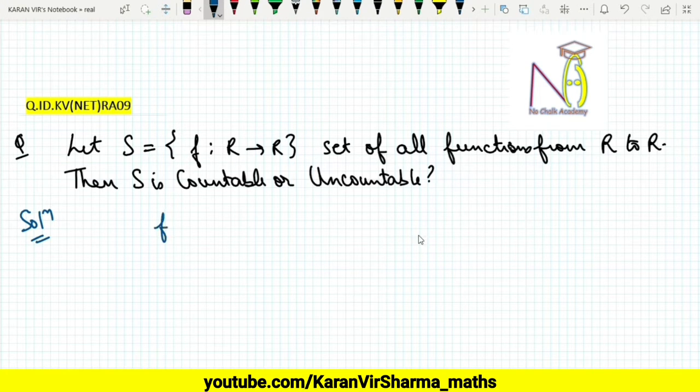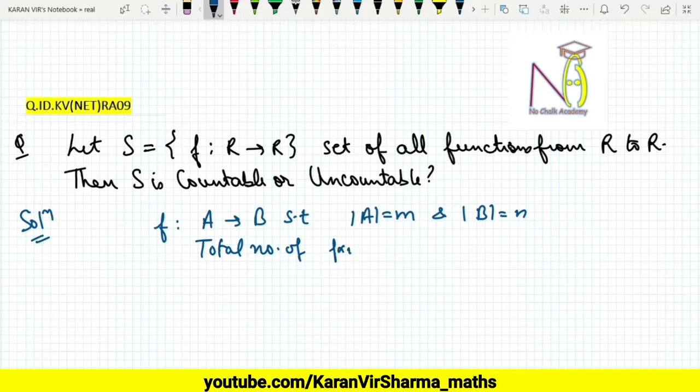a result that if f is a function defined from set A to B, such that the cardinality of A is m and the cardinality of B is n, then the total number of functions defined from set A to set B is the cardinality of B raised to the power of the cardinality of A, that is n raised to the power m.